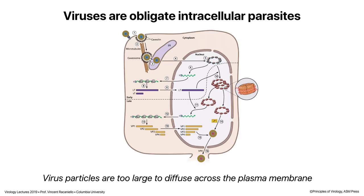There are a few viruses that don't need to bind receptors. That includes viruses of many plants where they're injected into the cell by insect and worm vectors. And there are some viruses of fungi that never leave the cell, so they don't have this issue of getting back in — they just divide, and when the cell divides, the viruses go to the new cells. But for most viruses we talk about in this course, they need to bind receptors to get into cells and begin that destabilization process.